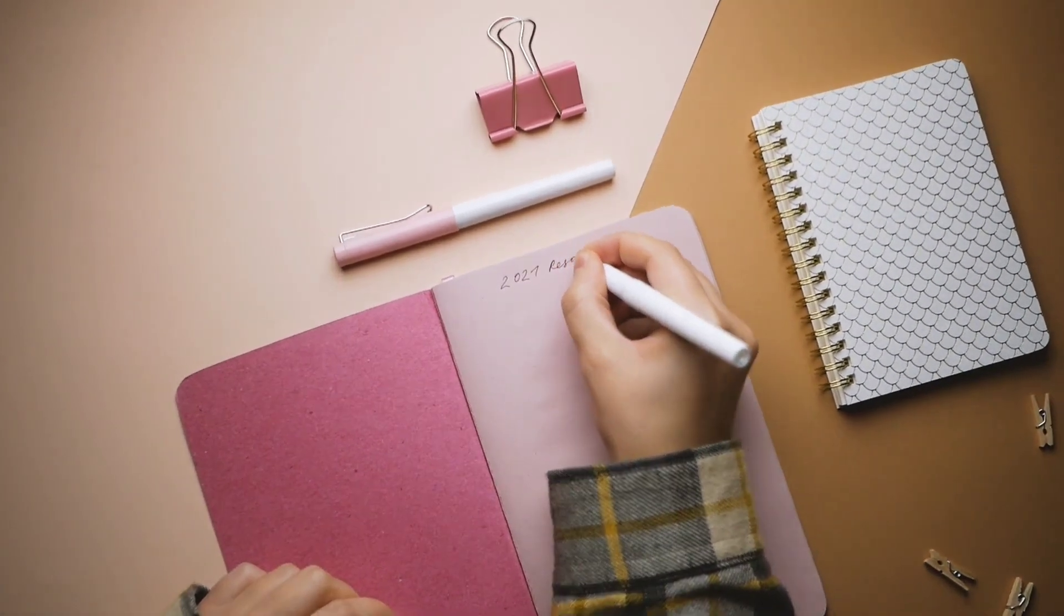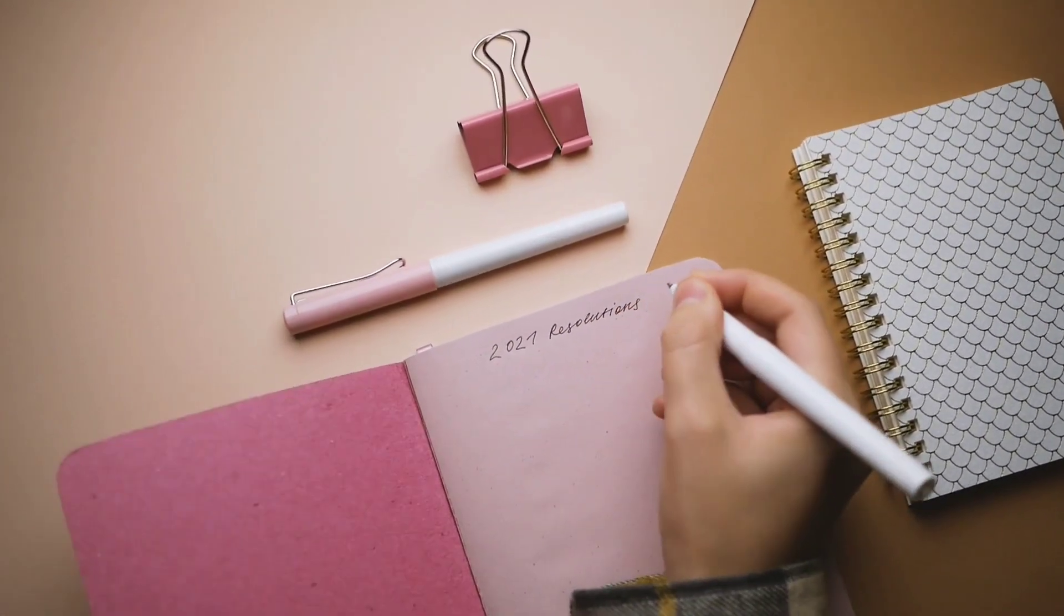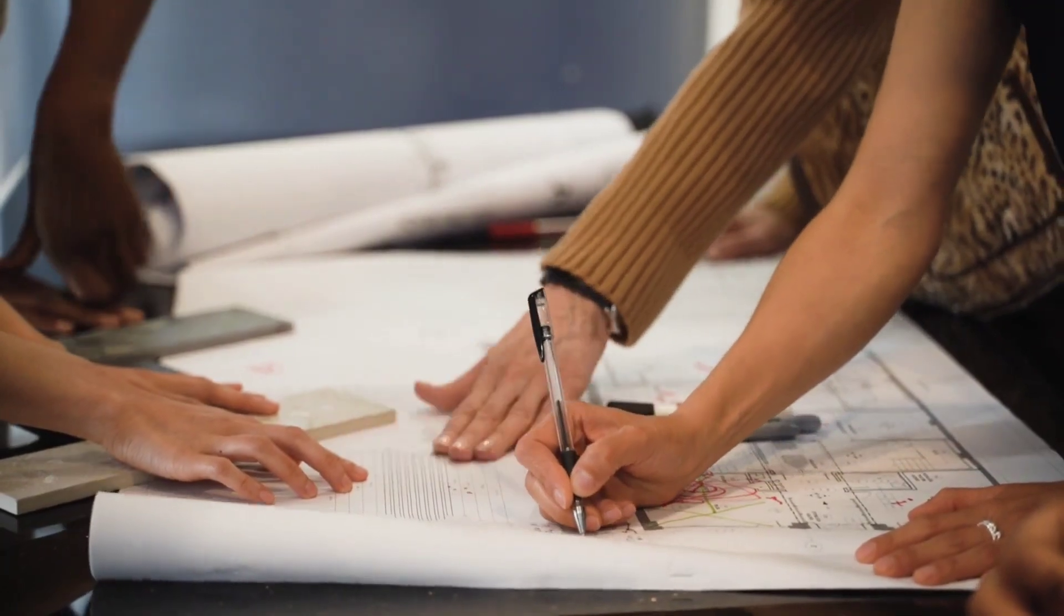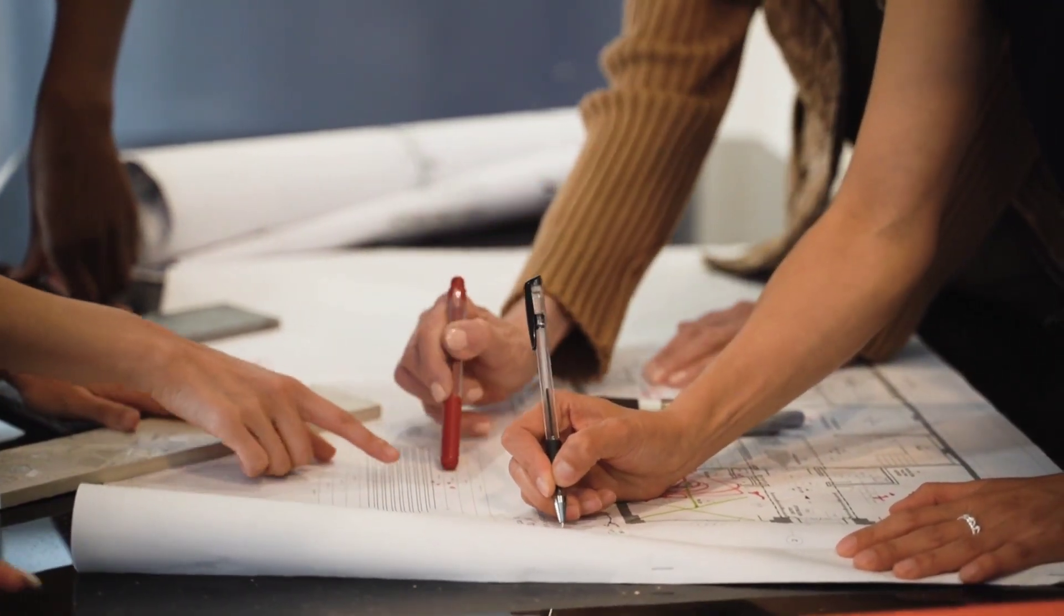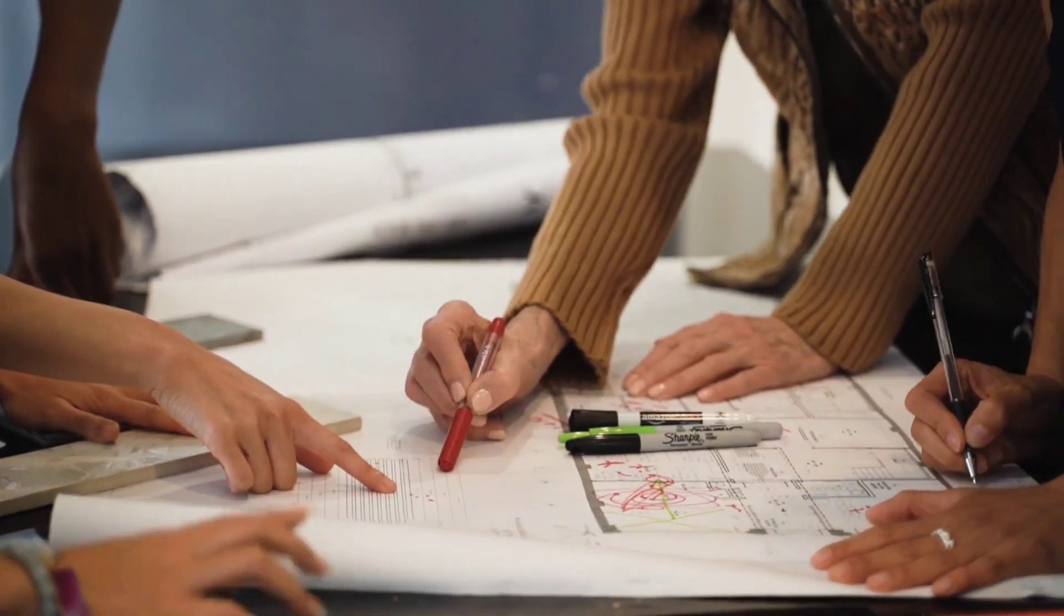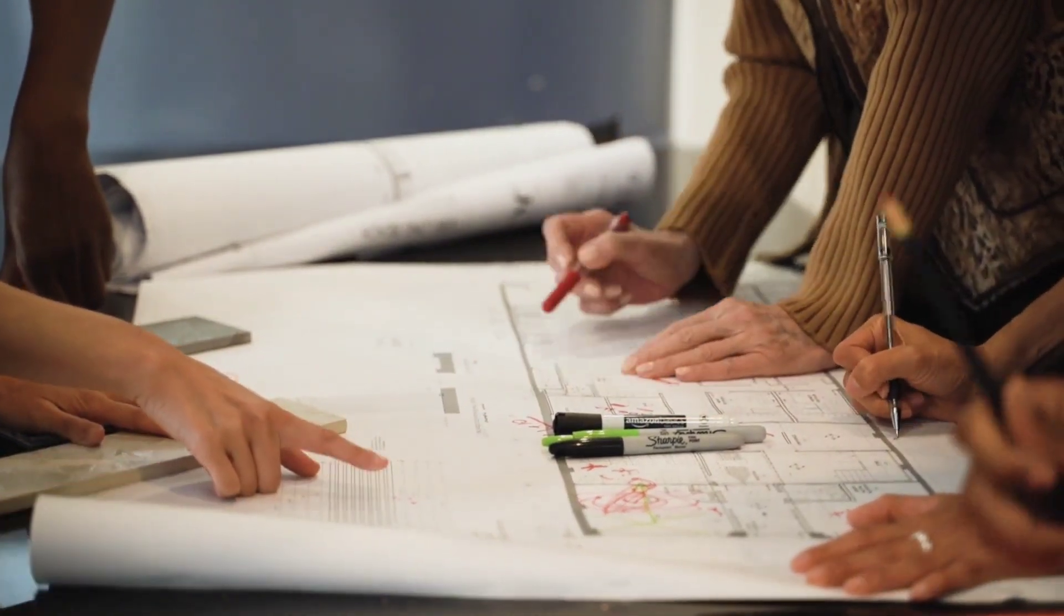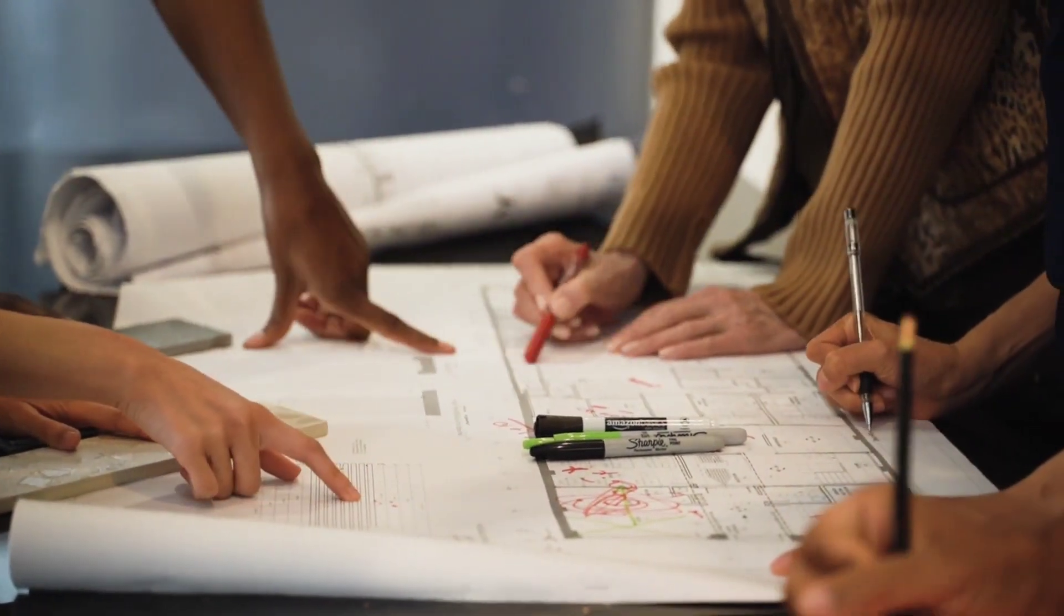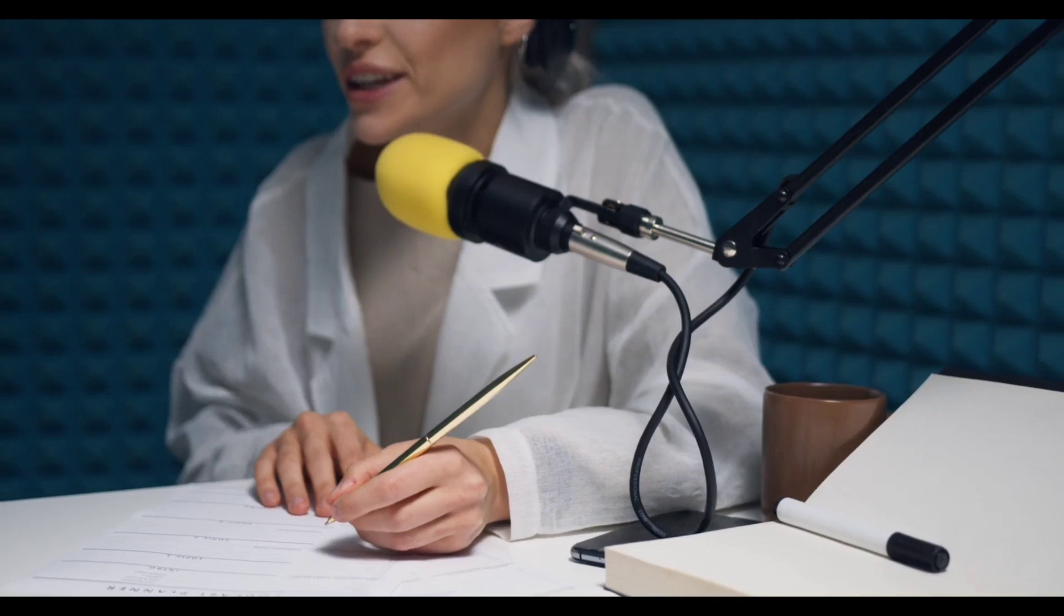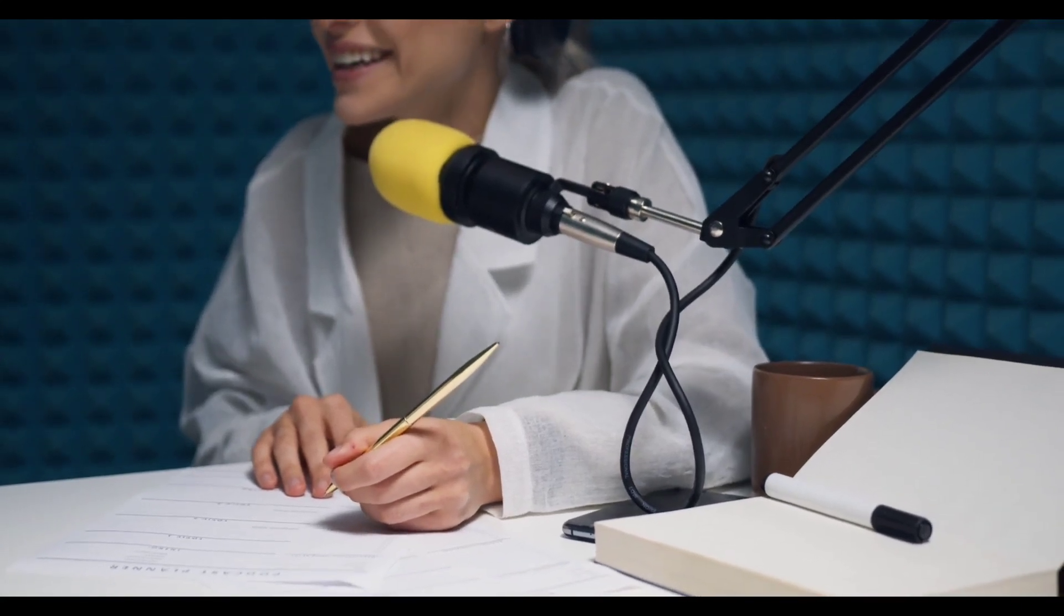15. Felt-tip pens, such as the Sharpie, use a porous tip to deliver ink onto paper. 16. The Pilot G2 gel pen is known for its smooth writing and is a favorite among many pen enthusiasts. 17. Some pens contain erasable ink that can be removed with friction or heat.